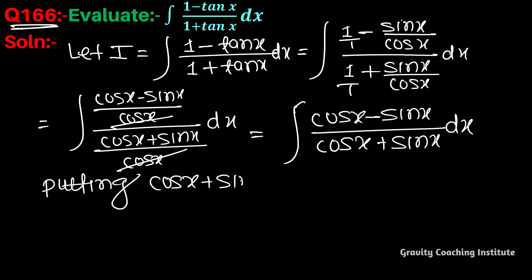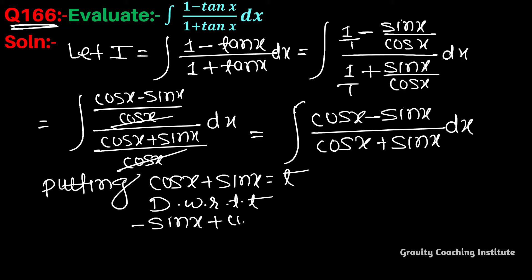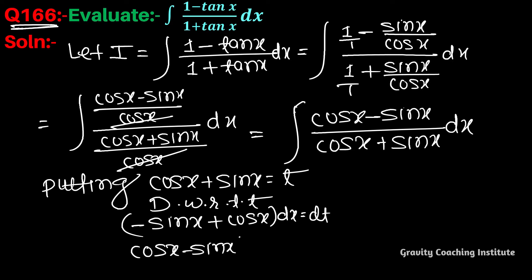Now we need to differentiate the denominator. Putting cos x + sin x equal to t, and differentiating with respect to t: the differentiation of cos x gives minus sin x, and differentiation of sin x gives cos x. Therefore, (cos x - sin x) dx equals dt.